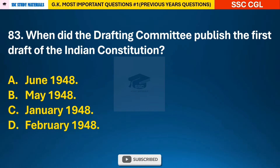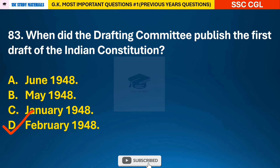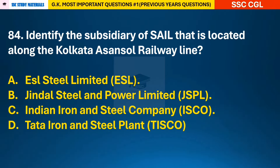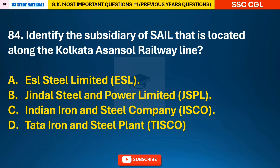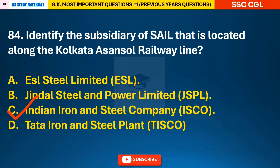Question 83: When did the Drafting Committee publish the first draft of the Indian Constitution? — answer D: February 1948. Question 84: Identify the subsidiary of SAIL that is located along the Kolkata–Asansol railway line — answer C: Indian Iron and Steel Company (IISCO).